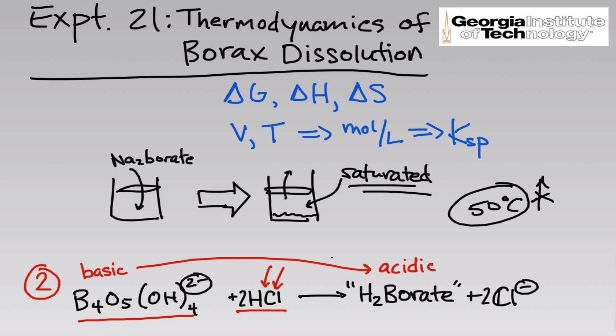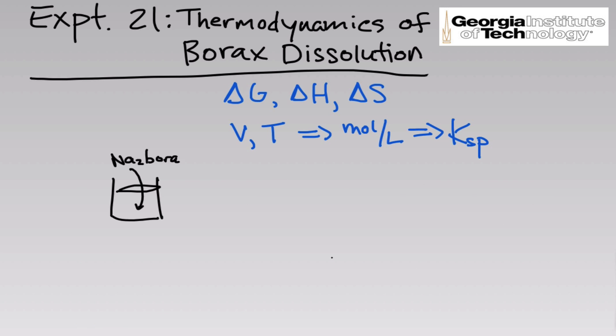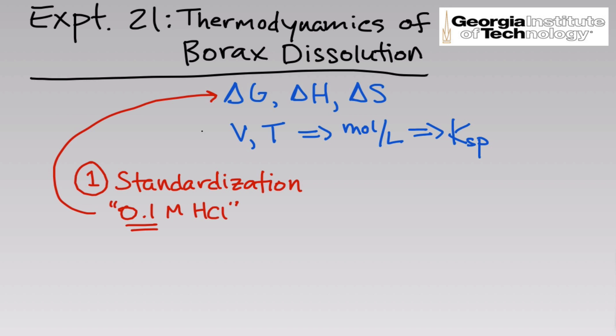Prior to doing the titration, students are going to do what's called a standardization. In the lab for this experiment, you'll see a bottle, a reagent bottle, that says something to the effect of 0.1 molar hydrochloric acid. This is something that's made up in the stock room, but people can be sloppy. Concentrations are never going to be exactly what they say on the reagent bottle. We want to know as precisely as possible what is the concentration of that hydrochloric acid.